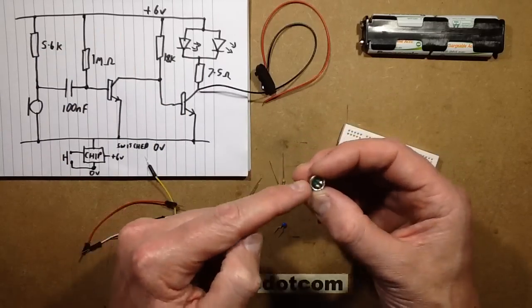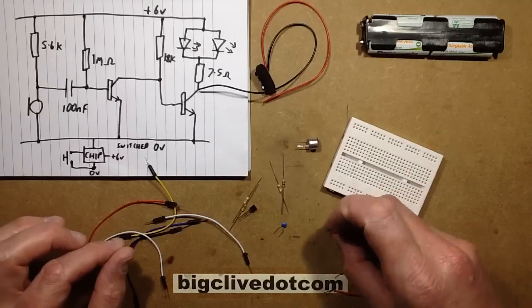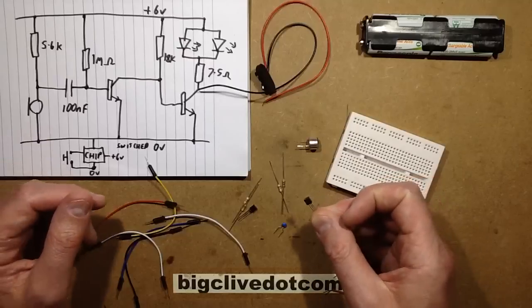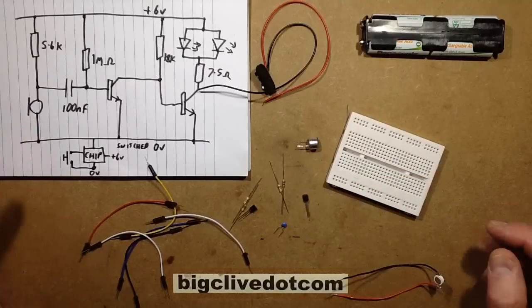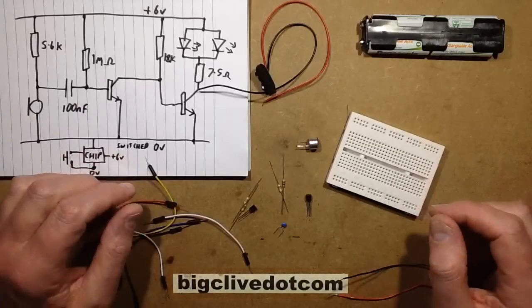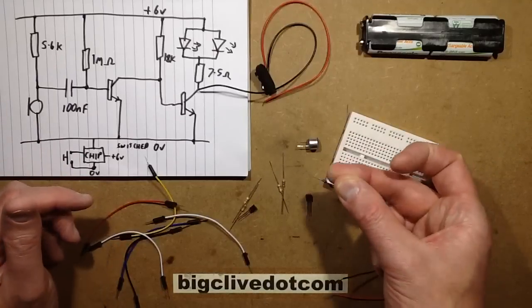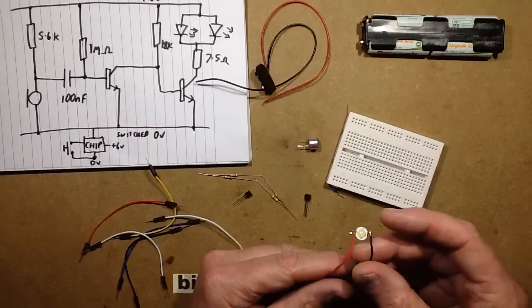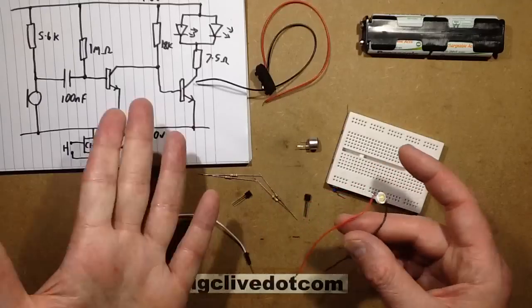I'm using two BC547 transistors because that's probably the most common transistor that I use here. A 2N3904 might work. Any generic NPN high gain transistor you can find will probably work fine. There's a 100 nano capacitor and of course the resistors. I've also got just a standard 3 watt LED as a bright light source.